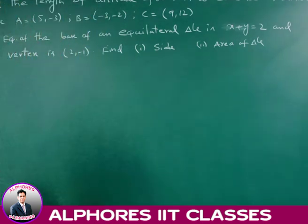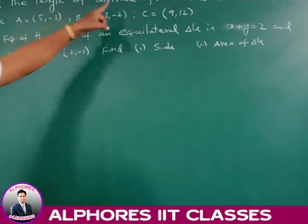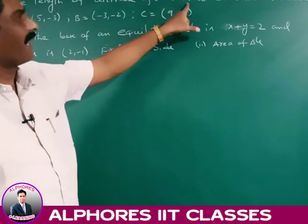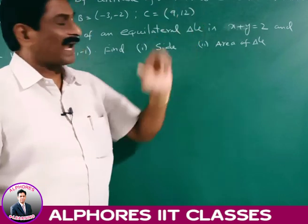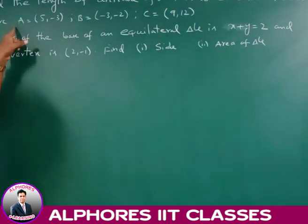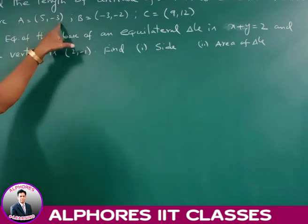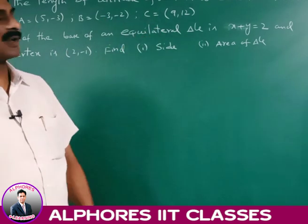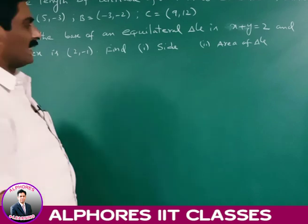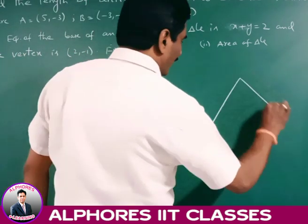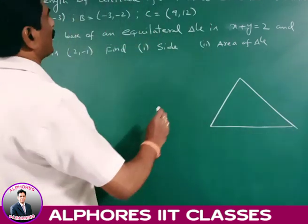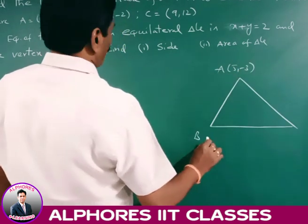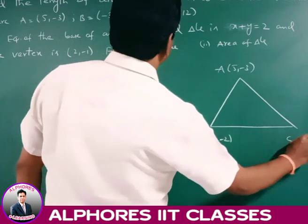First one: find the length of the altitude from capital A to side BC of triangle ABC, where A = (5, -3), B = (-3, -2), and C = (9, 12).